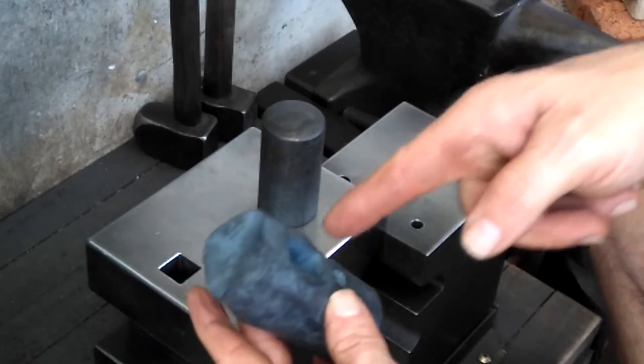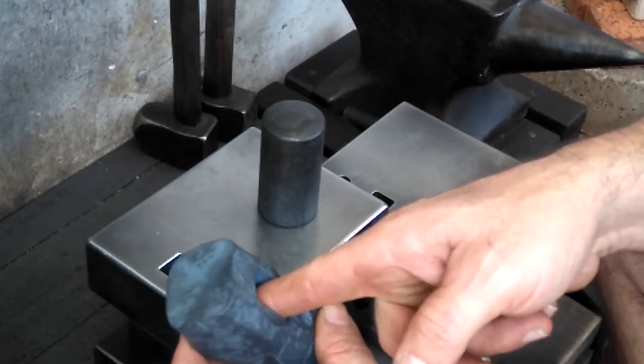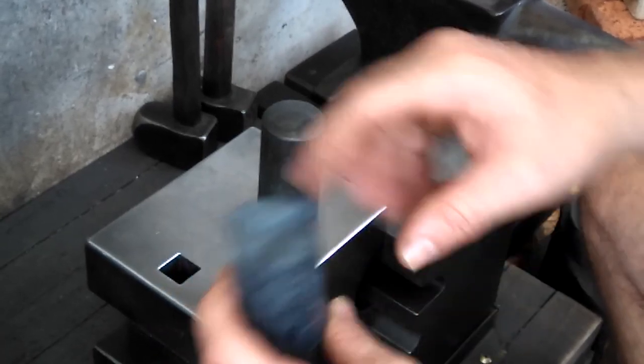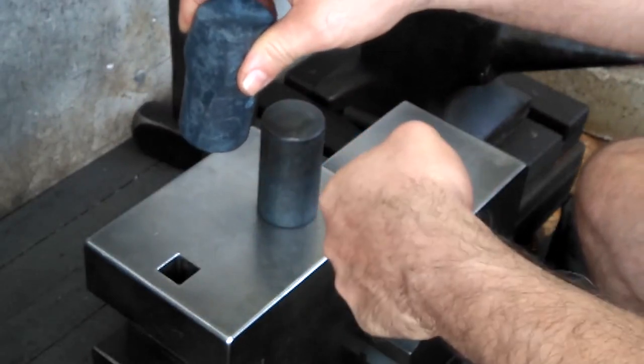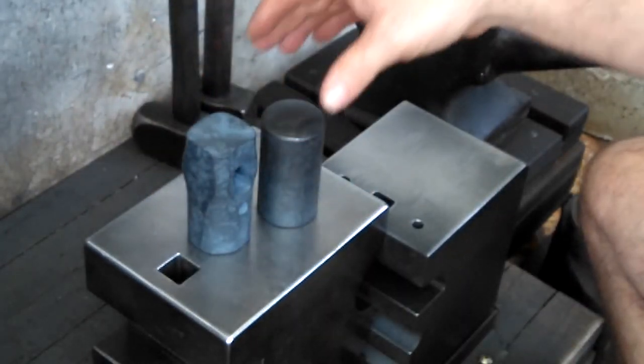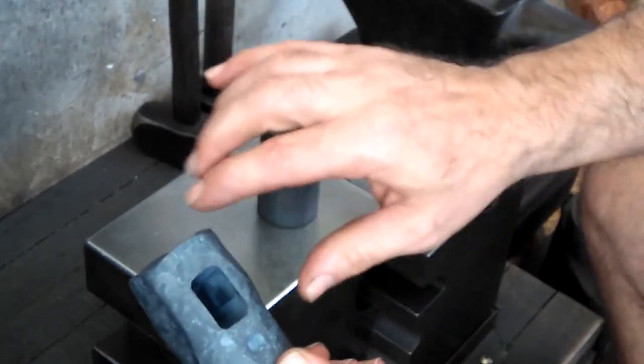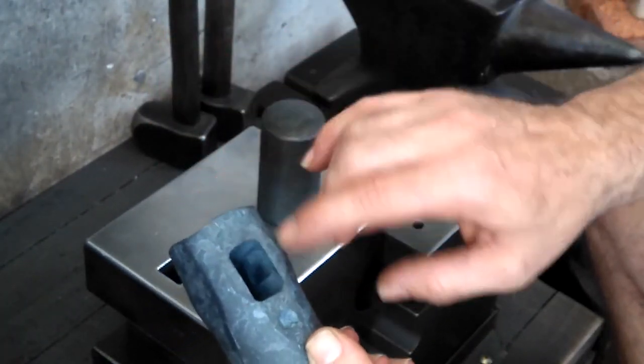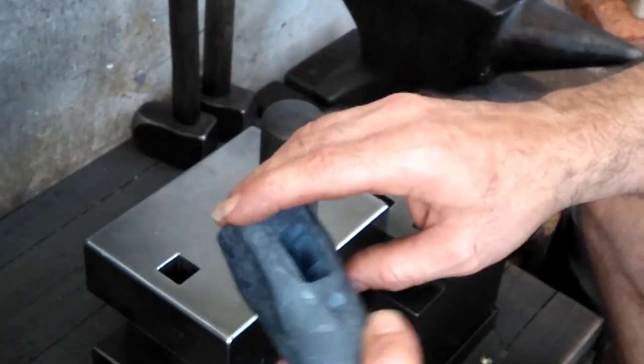How I'll probably hold this then is I'll probably insert the punch slap drift tool and then hold that via that and then hammer it in from the back end here. So this way the hole doesn't, if I leave the back end hot the hole doesn't deform again on me.